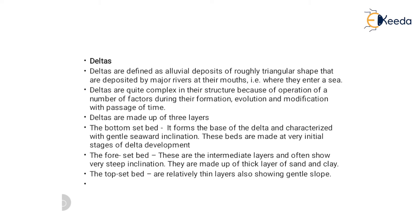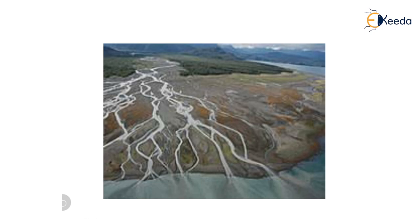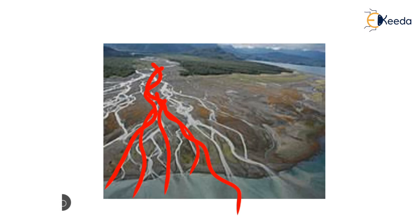Delta is defined as an alluvial deposit of roughly triangular shape deposited by major rivers at their mouth where they enter the sea. Deltas are quite complex in structure due to the operation of a number of factors during their formation, evolution, and modification over time. Deltas are made up of three layers: bottom set bed, foreset bed, and topset bed. The bottom set bed forms the base with gentle seaward inclination. Foreset beds are the intermediate layer showing steep inclination, made up of thick layers of sand and clay. Topset beds show alternating thin layers with a gentle slope. One river breaks into different distributaries and enters the sea, forming a conical triangular structure called a delta.